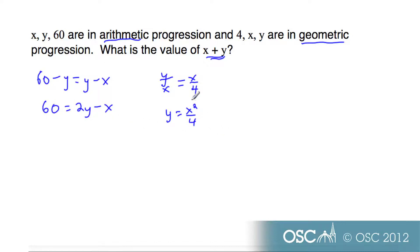As this is the case, we can now take this value of y and substitute in here. So, let's have a look. 60 equals 2, and substitute in what we know for y, x squared over 4, and then subtract x. Taking this, multiply everything by 2 to get rid of the denominator, which cleans up the quadratic that results.